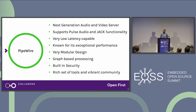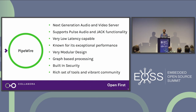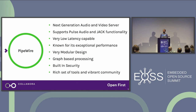PipeWire supports what was traditionally supported by PulseAudio — the standard desktop API — and also JACK, the pro audio API. PipeWire kind of supports both together. It not just supports the functionality; it also has a thin emulation layer so all legacy apps using PulseAudio or JACK can seamlessly switch to PipeWire. It would just work.